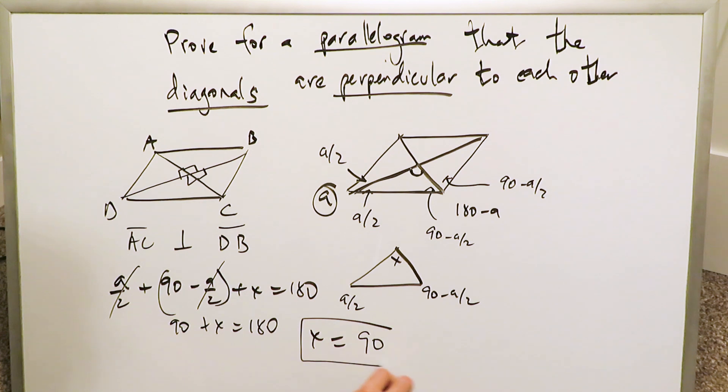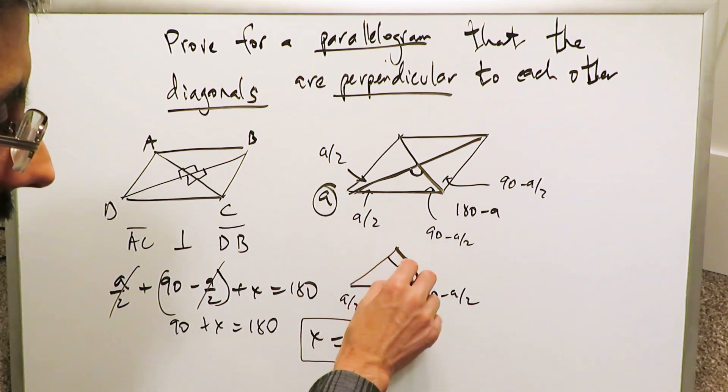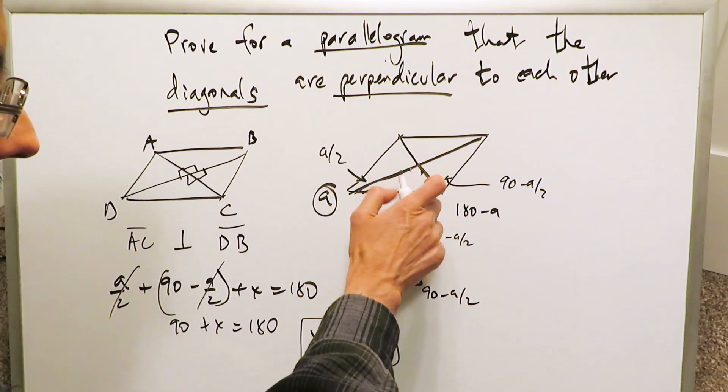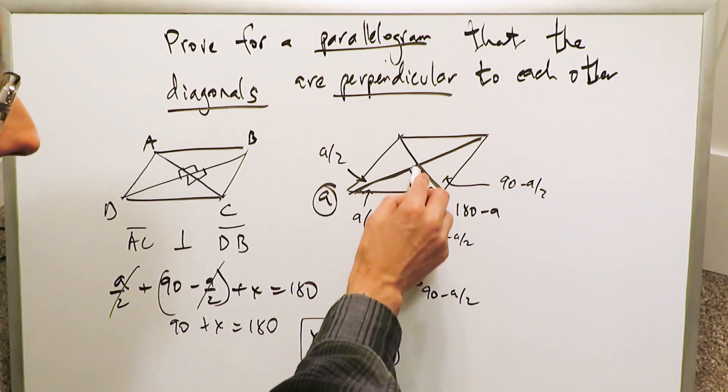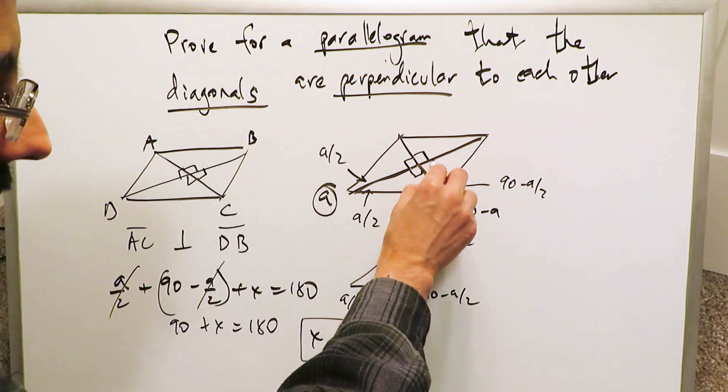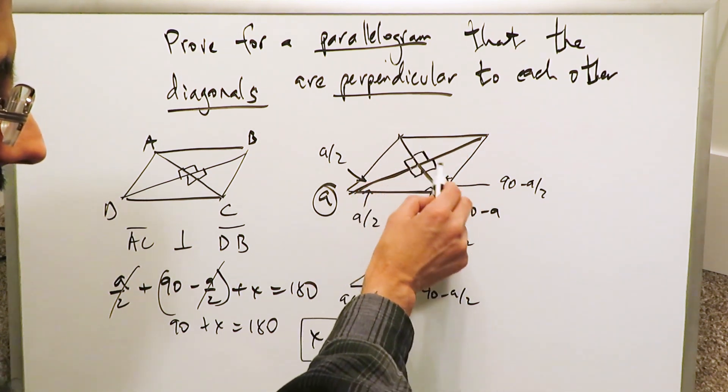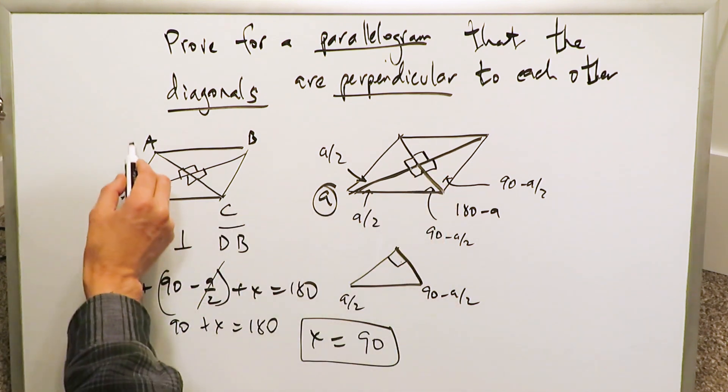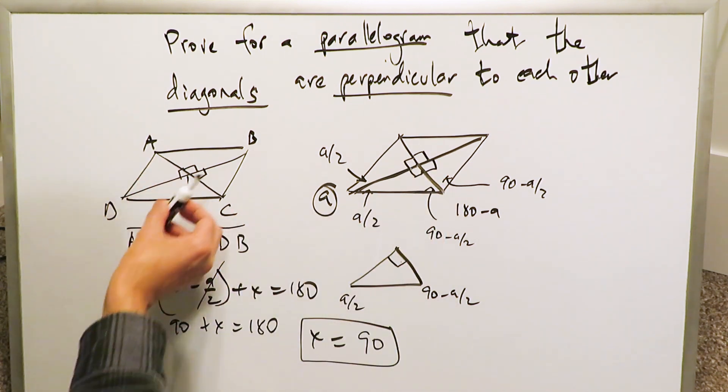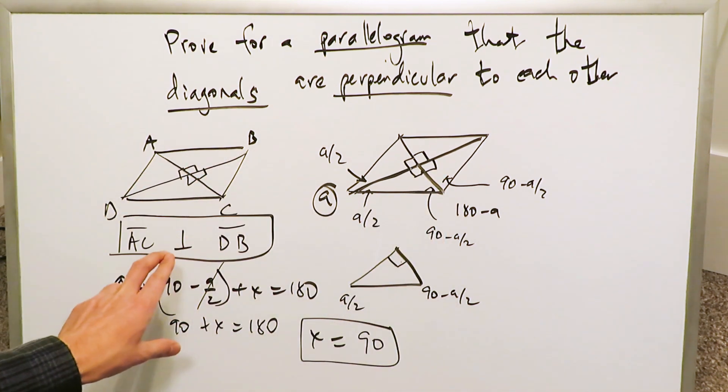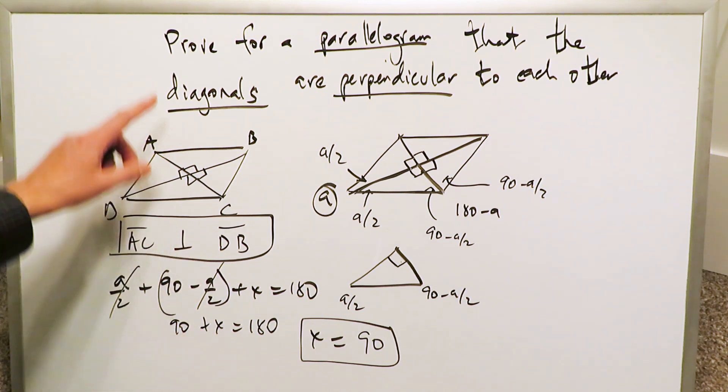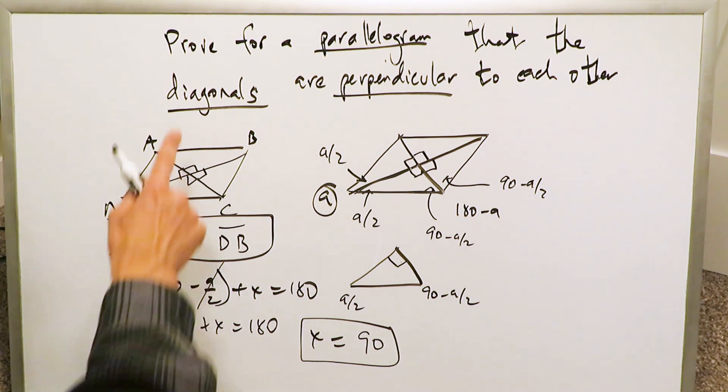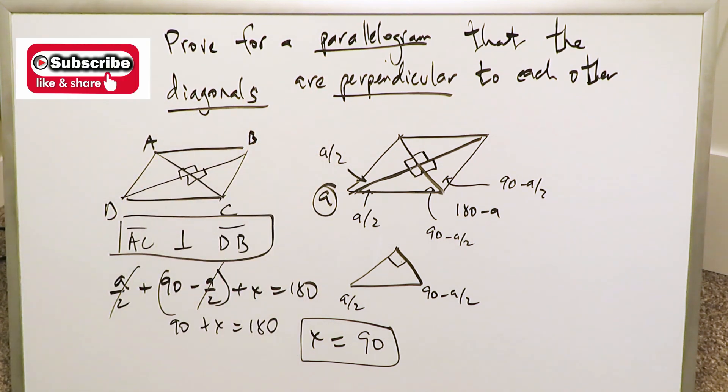180 minus 90 is 90. So now we've demonstrated that this angle X over here is indeed 90 degrees. It's a right angle, and we can draw the designation here for a right angle. But the same thing will be determined for all of these, because they will all have the same internal angles. So now you can see the fact that all of these are 90 degrees, and indeed segment AC and segment BD, they will have a perpendicular relationship. They'll meet at 90 degrees with one another.